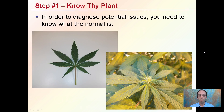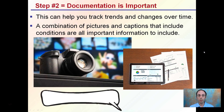First off, you have to know the plant. You have to know what the plant looks like, because in order to diagnose a potential issue, you need to know what the normal is — what should the plant look like. And this could vary depending on the cultivar. Taking notes is good, and continuing to document pictures, because you want to know what the normal of the plant should look like.